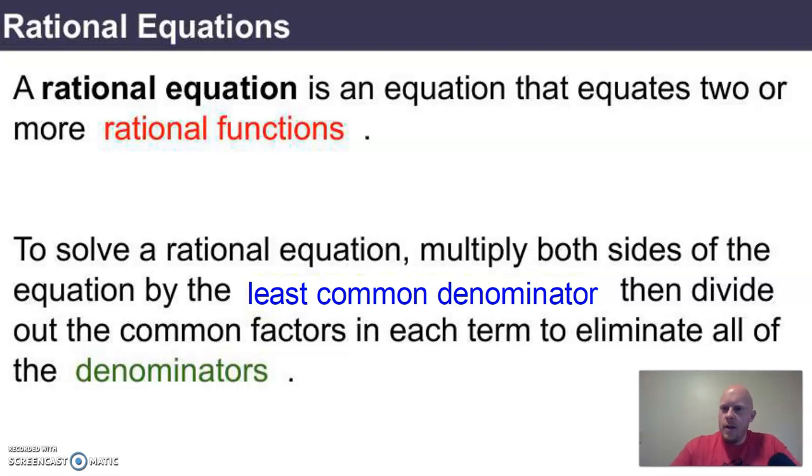To solve a rational equation, we're going to multiply both sides of the equation by the least common denominator. And then what we'll do is we'll divide out the common factors in each term to eliminate all of the denominators. What you'll see through practice is that by multiplying by that least common denominator, we're going to create an equation that is either linear or quadratic that can be solved using the techniques that we already know.